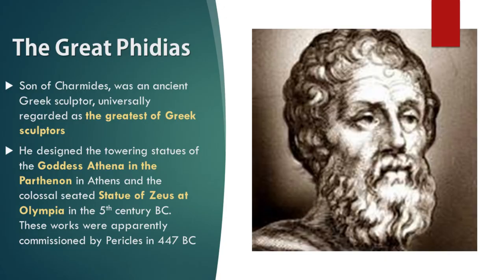The great Phidias, son of Charmides, was an ancient Greek sculptor universally regarded as the greatest of Greek sculptors. He designed the towering statues of the goddess Athena in the Parthenon in Athens and the colossal seated statue of Zeus at Olympia in the 5th century BC. Phidias is considered the most skilled of all ancient Greek sculptors, and these works were apparently commissioned by Pericles in 447 BC.